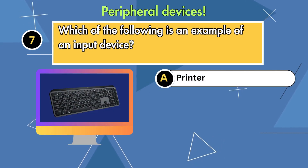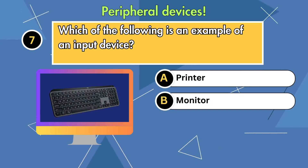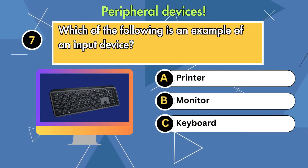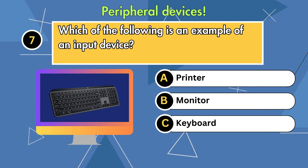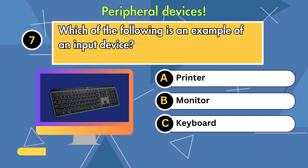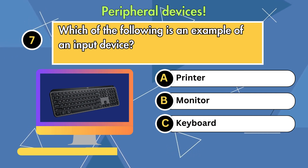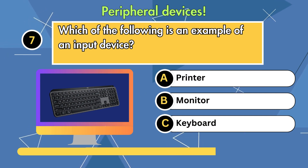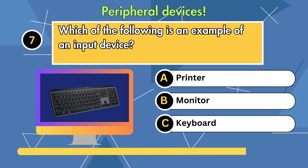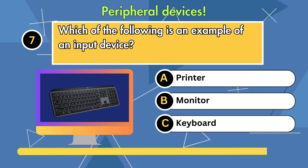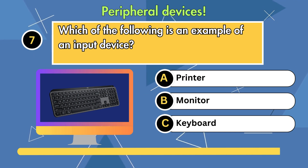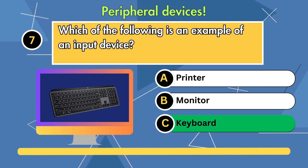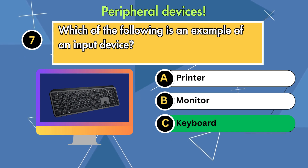Question 7. Which of the following is an example of an input device? Option 1: Printer. Option 2: Monitor. Option 3: Keyboard. Answer is keyboard.